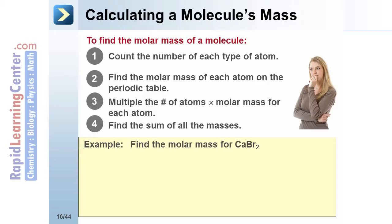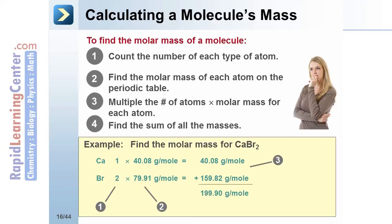For example, find the molar mass for CaBr2. There's one calcium atom and two bromine atoms. Calcium has a mass of 40.08 grams per mole, as found on the periodic table. The mass for bromine is 79.91. The number of atoms is multiplied by the mass for each atom. And finally, these are added together to find the total mass of the molecule. One mole of CaBr2 molecules would have a mass of 199.90 grams.